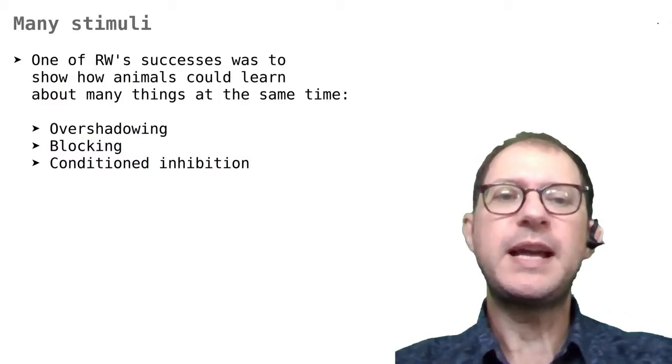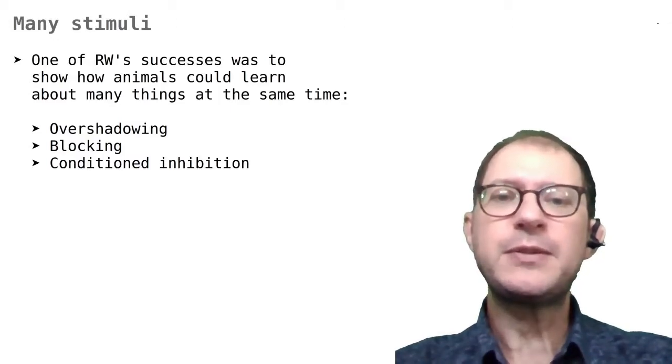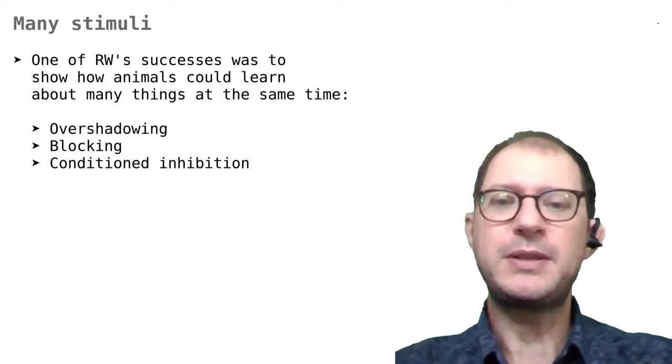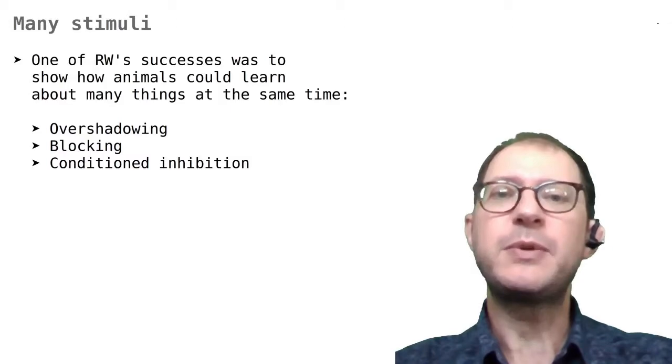We have already seen how animals can learn about one stimulus in our lessons on the Rescorla-Wagner model, or RW for short. In the first of those lessons, I also mentioned that RW is famous in part because it can explain learning in complex situations, and in this lesson we will see how.